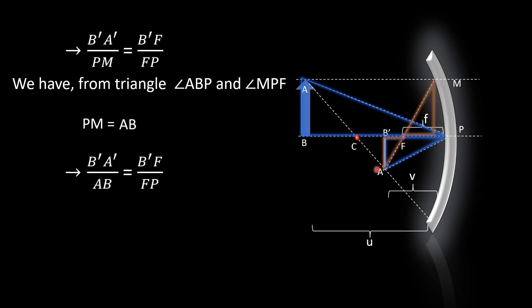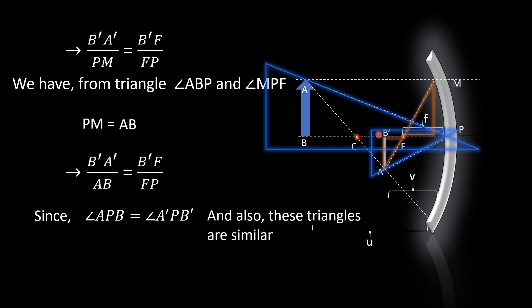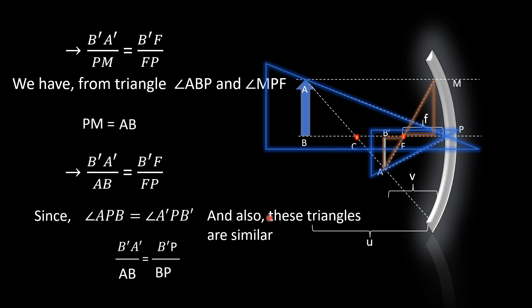Next, consider triangle APB and triangle A'PB' — these are similar triangles. By similarity, A'B' divided by AB equals B'P divided by BP. Both sides of the similar triangles are equal and proportional.